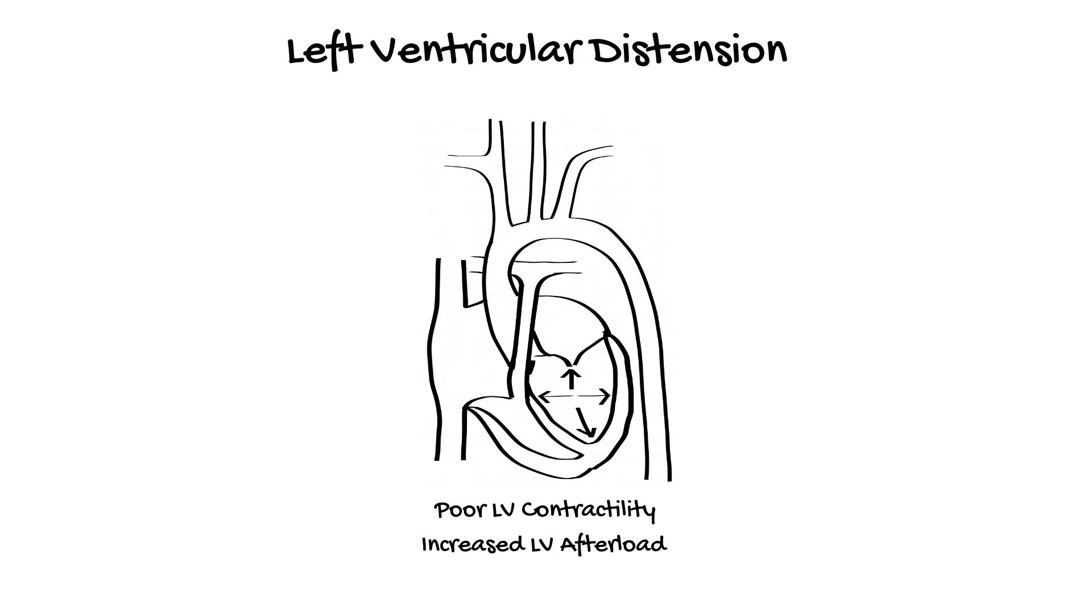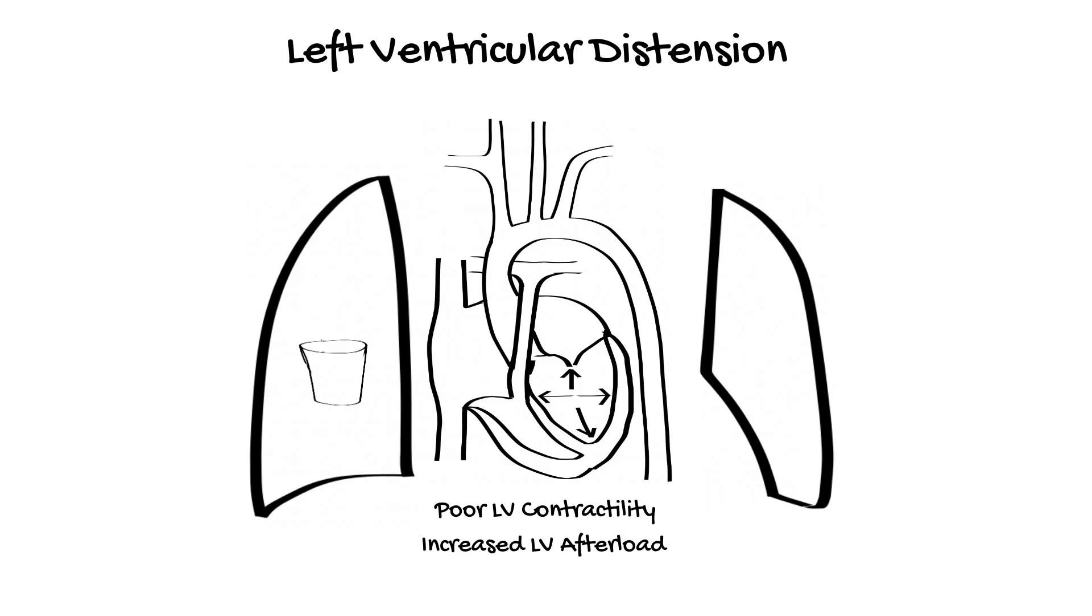When left ventricular distension occurs, the forward flow through the lungs is impaired, and can result in pulmonary edema and pulmonary hemorrhage. Rarely, stagnant blood in the left ventricle can clot.